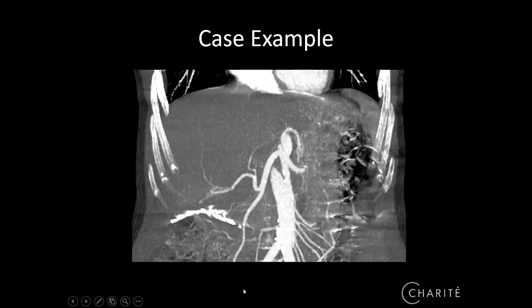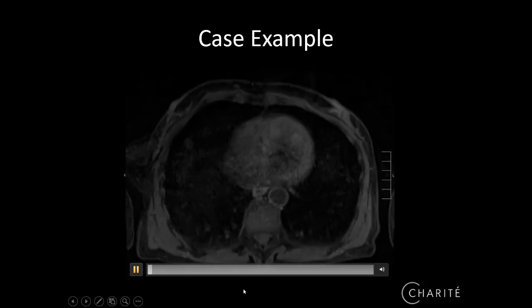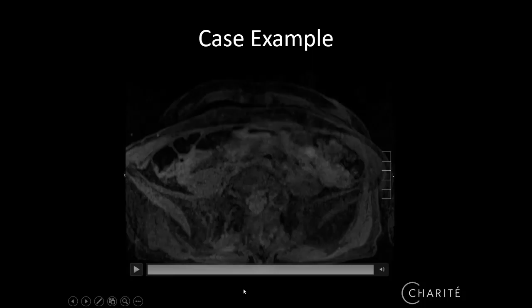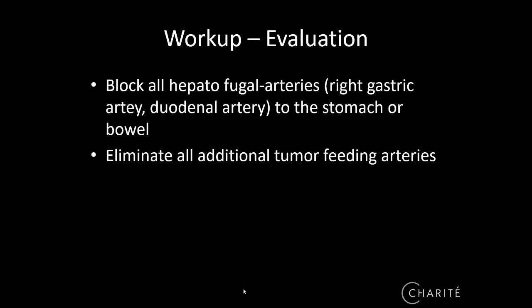Here is a case example — a lady who is a nurse here in Berlin with hepatitis B. She developed HCC and had a resection of a tumor before, and now has multifocal disease. She has typical anatomy. The extent of multifocal disease before embolization is shown here, with clips from the prior resection. The indication was determined by the tumor board. We wanted to block all the arteries and eliminate additional tumor-feeding arteries to obtain complete embolization and complete radiation with no extrahepatic foci.